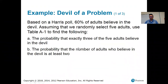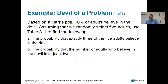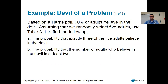The second question was: what's the probability that the number of adults who believe in the devil is at least two? Whenever it says anything like at least, at most, fewer than, or more than, you have to think carefully about what numbers are included. At least two means two or three or four or five — it includes two.